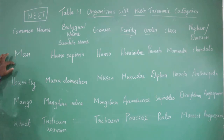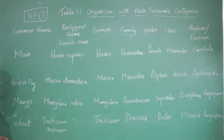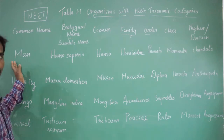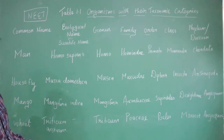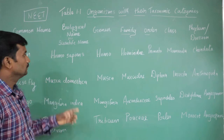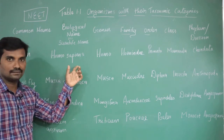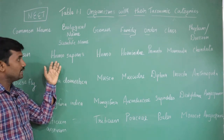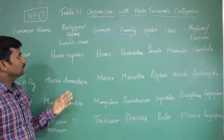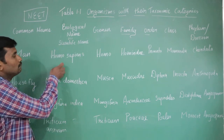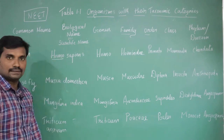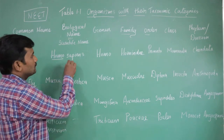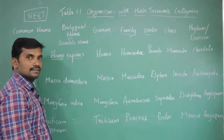For example — man, house fly, mango, and wheat. First we can study the systematic position of human beings. The scientific name of humans is Homo sapiens. The biological name of human is Homo sapiens. Homo represents the generic name; sapiens represents the species name.